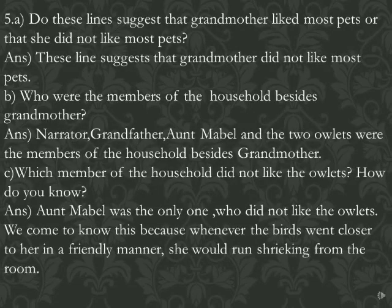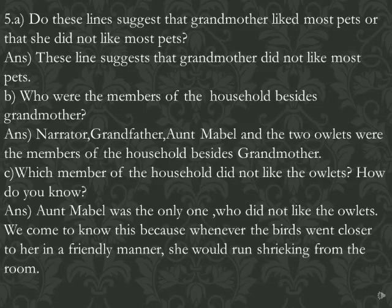5A: Do these lines suggest that grandmother liked most pets, or she did not like most pets? These lines suggest that grandmother did not like most pets. Number B: Who were the members of the household besides grandmother? 'Besides grandmother' means you won't be including grandmother. So except grandmother, the narrator, grandfather, Aunt Mabel, and the two owlets were members of the household.